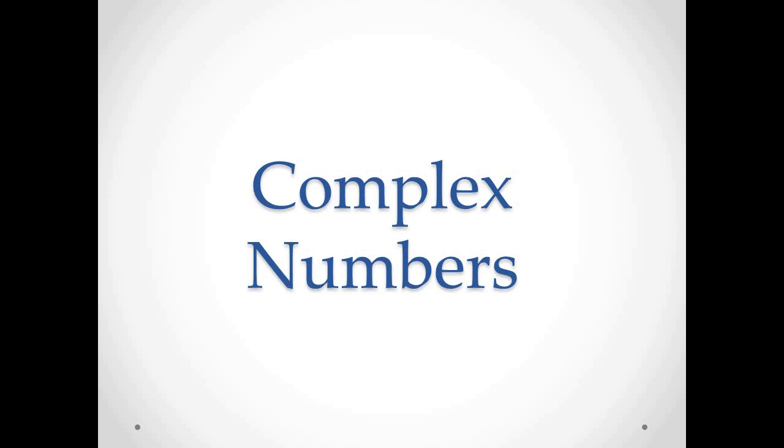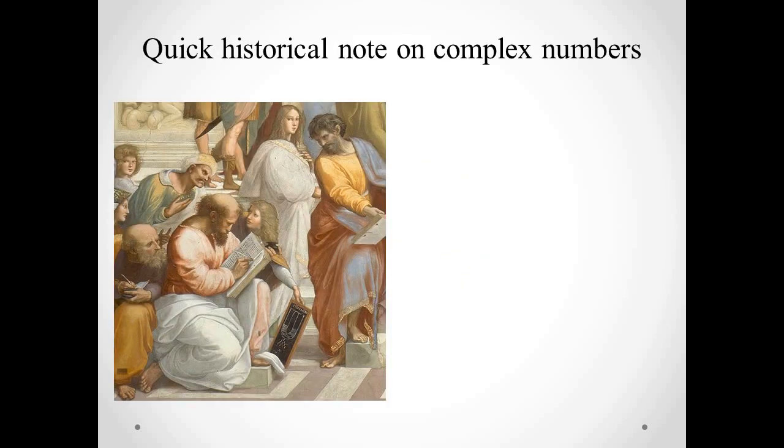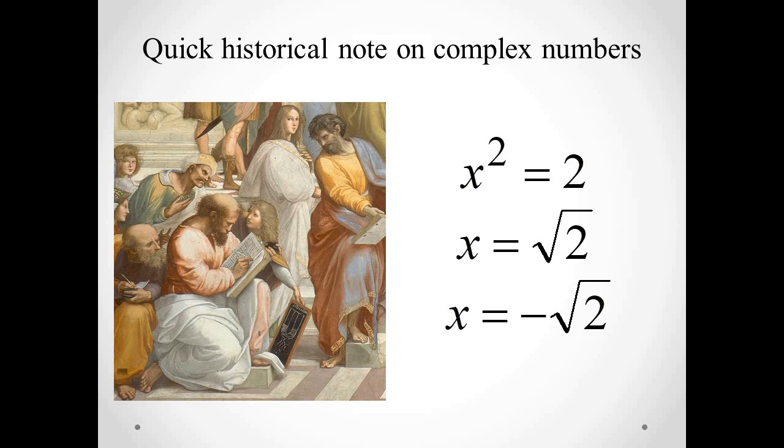The idea of inventing new numbers might seem odd to you, but think about this example. A group of mathematicians known as the Pythagoreans proved over 2000 years ago that the equation x squared equals 2 has no solutions that are rational numbers. You may be thinking that the solutions are square root of 2 and negative square root of 2, but at the time those numbers had not been defined, so the Pythagoreans invented the new kind of numbers, the irrational numbers, like square root of 2 and negative square root of 2.